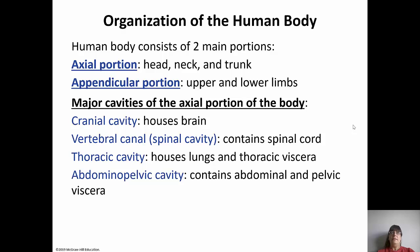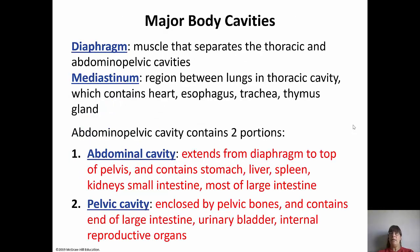How is our human body organized? The human body consists of two main portions: the axial portion and the appendicular portion. The axial portion is the center - the head, neck, and trunk. The appendicular portion is the upper and lower limbs. The axial portion has major body cavities: the cranial cavity houses the brain; the vertebral or spinal cavity contains the spinal cord; the thoracic cavity has the lungs and thoracic viscera; and the abdominal pelvic cavity contains the abdominal and pelvic viscera. The mediastinum is the region between the lungs containing the heart, esophagus, trachea, and thymus gland.